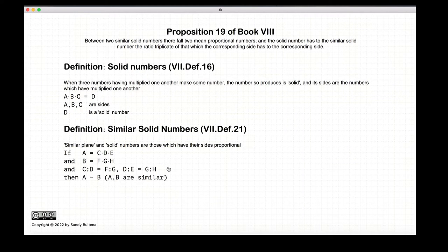We also need to look at what is a similar solid number. If we have two numbers A and B that are both solid numbers, and if the ratio C to D is equal to the ratio F to G, and the ratio of D to E equals the ratio of G to H, then A and B are similar solid numbers. That's a definition, not a proof.